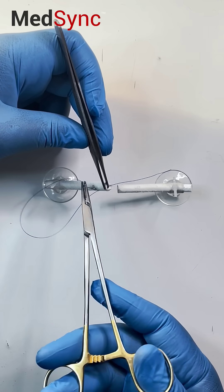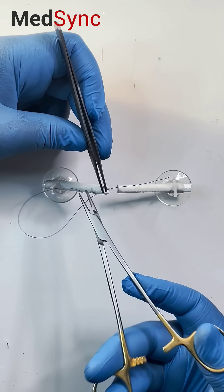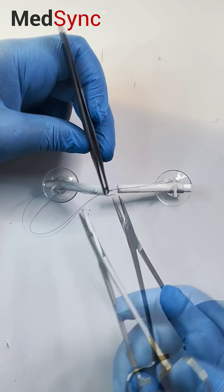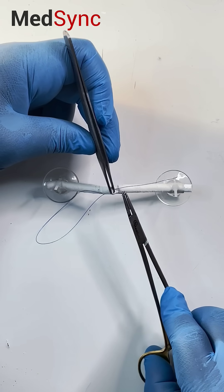On the forceps, rotate the needle, don't force it. Once you're through, pull.